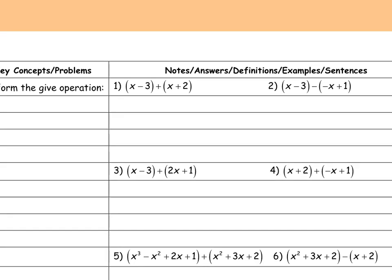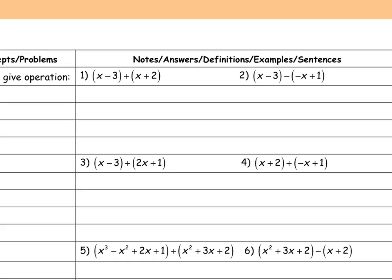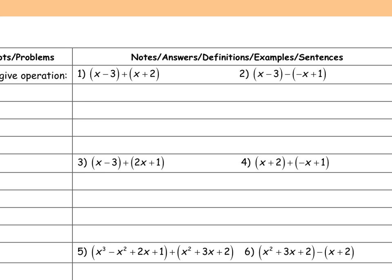It says to perform the given operation — whatever it says, add or subtract, we're going to do that. I can do it vertically or horizontally, whichever you choose. For the first problem, my like terms are here and here. So x plus x gives me 2x, and negative 3 plus 2 gives me negative 1. The answer is 2x minus 1.